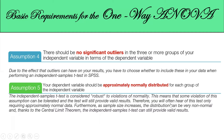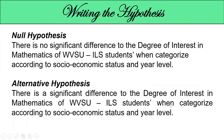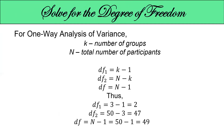But first, let's have the hypothesis testing. The first step is writing the hypothesis. For our null hypothesis: there is no significant difference in the degree of interest in mathematics of BEVSU ILS students when categorized according to socioeconomic status and year level. For the alternative hypothesis: there is a significant difference in the degree of interest in mathematics of BEVSU ILS students when categorized according to socioeconomic status and year level. For one-way ANOVA, K is the number of groups and N is the total number of participants. Take note of that.